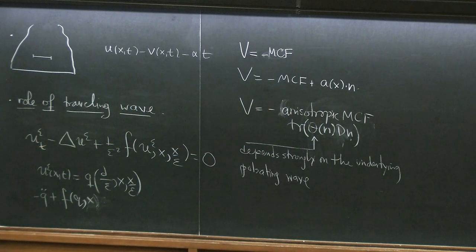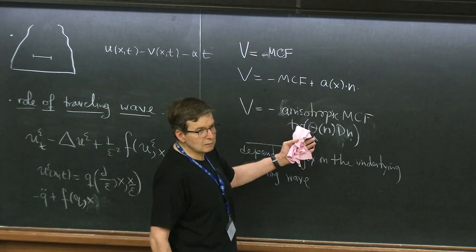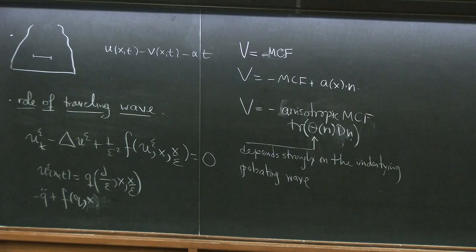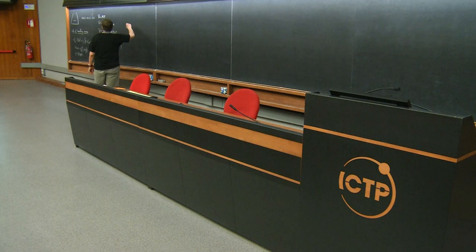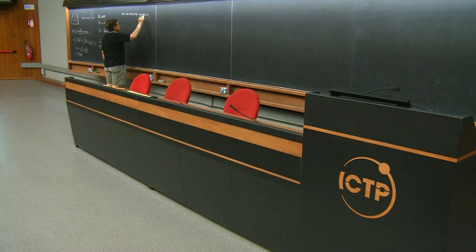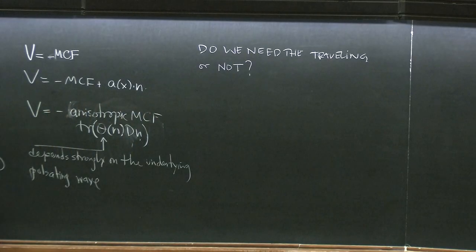This anisotropy depends strongly on the underlying pulsating wave. So it's a natural question: do we really need the traveling wave to do something? I wrote down the beginning of the proof but never computed theta(n). Do we need the traveling wave, or can we do the proof without it? All the proofs I know use the traveling wave.